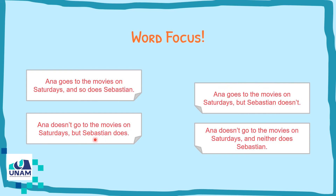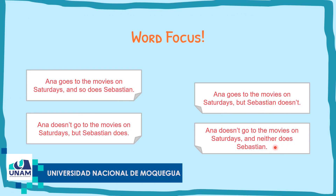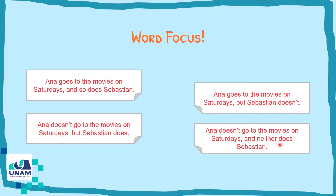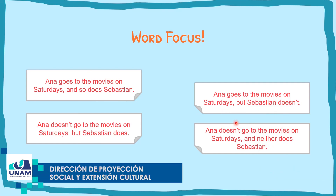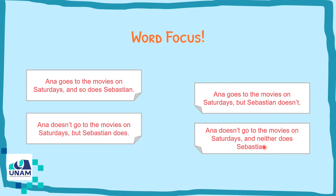The third case: 'Anna doesn't go to the movies on Saturday, and neither does Sebastian.' We use 'neither do' or 'neither does' to connect two negative sentences. Anna doesn't go to the movies — negative — and neither does Sebastian. This means Anna doesn't go on Saturdays, and Sebastian doesn't either. We use 'does' because Sebastian is third person. That's everything — I hope it was helpful. Thank you for your attention.